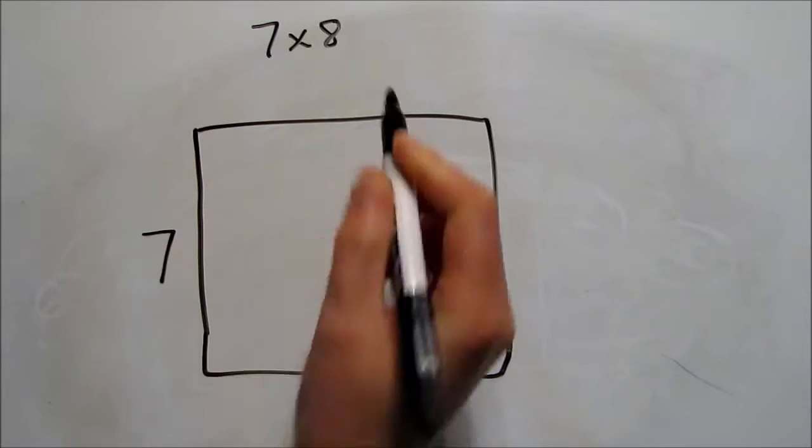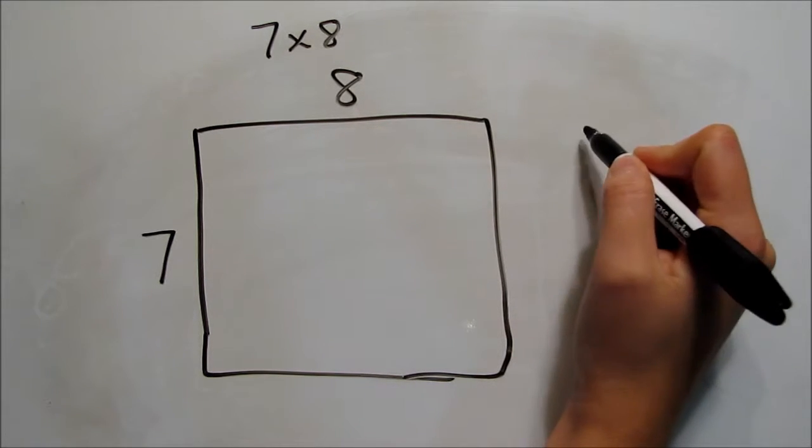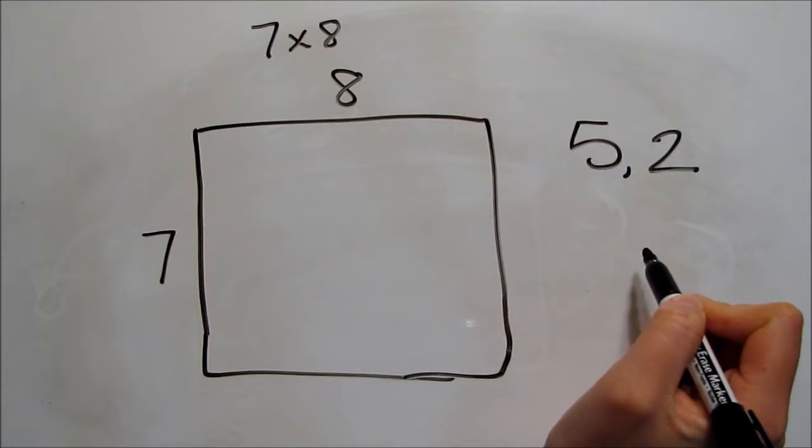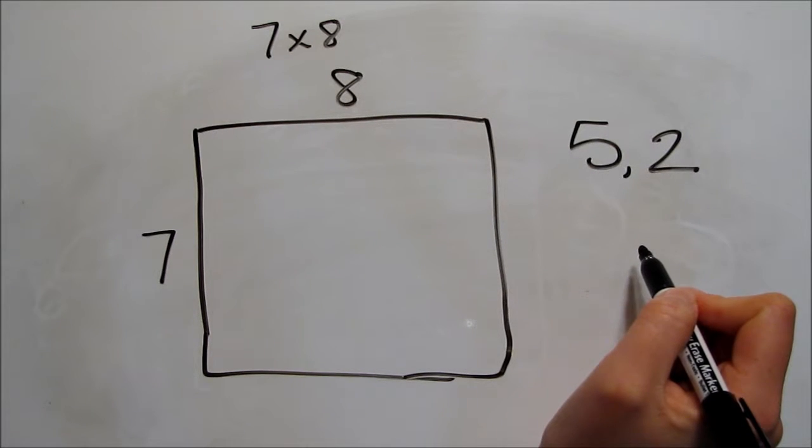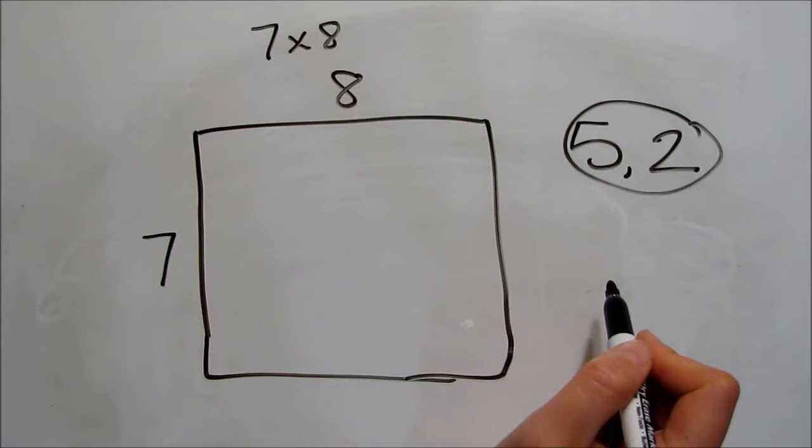We'll draw and label our open array, and then decide which number we want to break up and how we want to break it. There are lots of different ways to break this array apart that will get us the correct answer. I tend to emphasize 5s, 2s, and other numbers that kids are usually familiar with. Let's look at one example. If we split this 7 into 5 and 2...